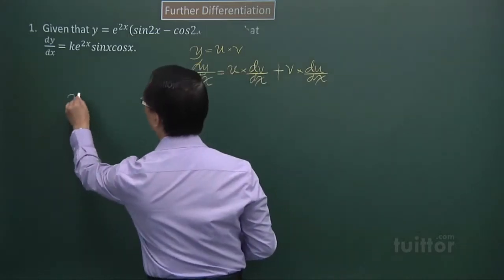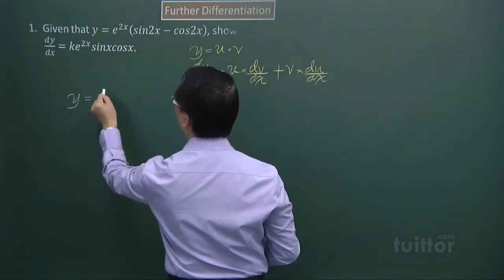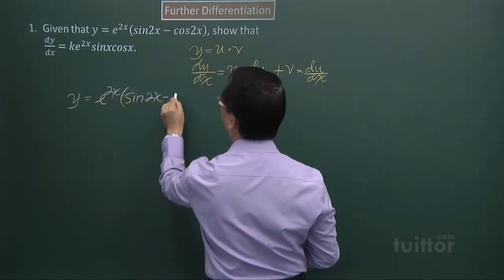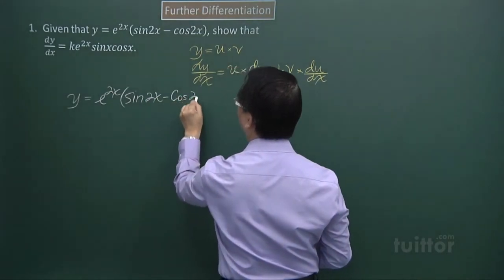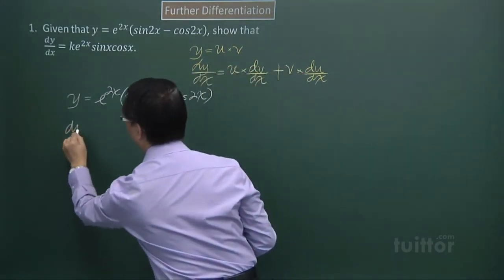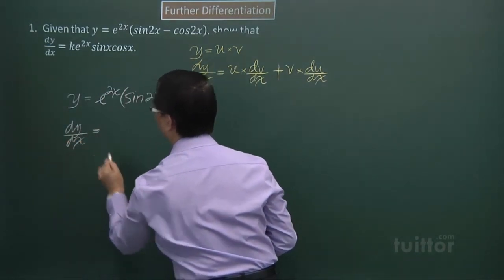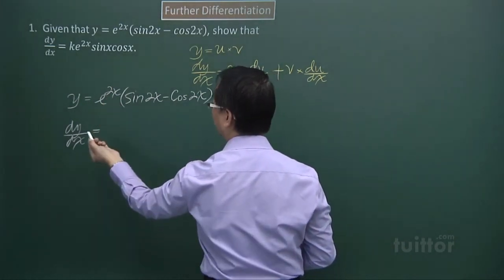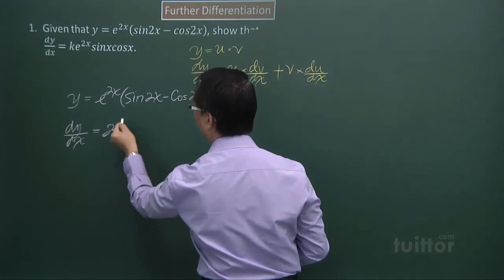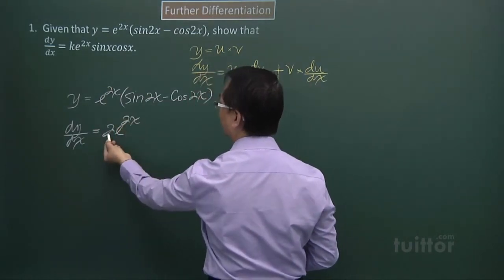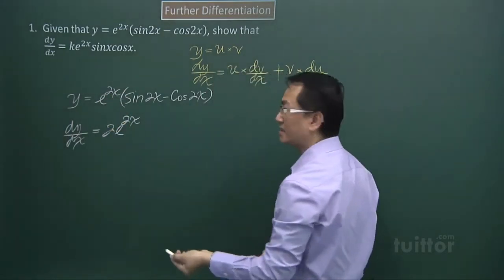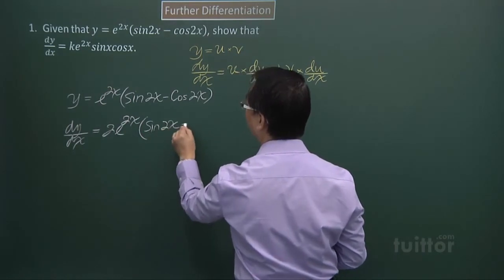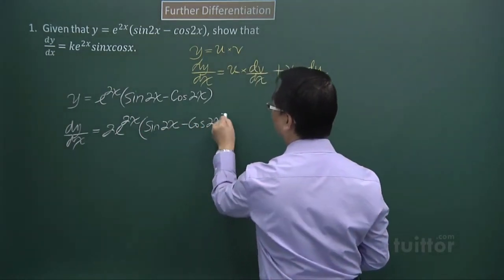So rewriting the equation, y is equal to e to the power of 2x bracket sin 2x minus cos 2x. Next is dy/dx equal to the first derivative. I will differentiate e to the power of 2x first. Then I'll get 2e to the power of 2x. The 2 comes from differentiating the 2x, keeping the sine 2x minus cos 2x intact.